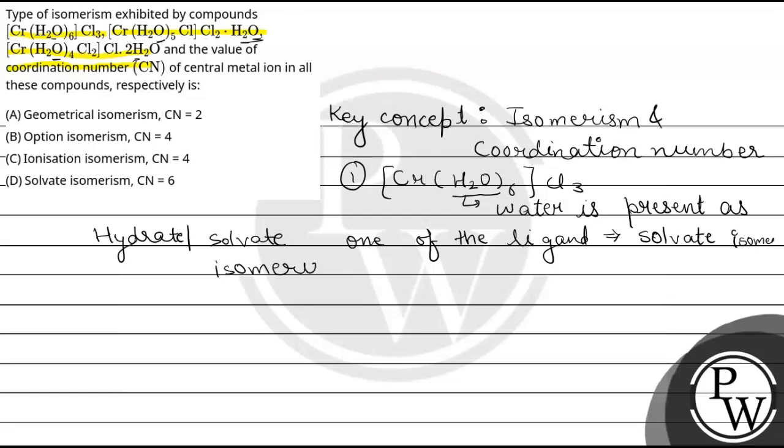Now, let's talk about coordination number. Coordination number is basically the number of ligands attached with the central metal atom.